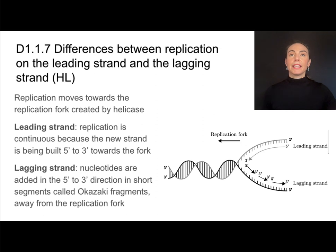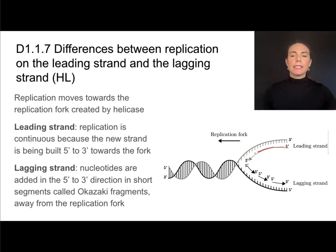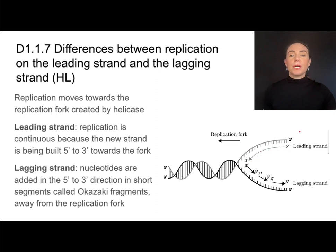Here's why the leading strand is continuous: it moves in the 5-prime to 3-prime direction. Remember, we can only add new nucleotides to the 3-prime end. So as DNA polymerase adds nucleotides — adding, adding, adding — it's always adding to the 3-prime end, building the strand continuously and moving toward the replication fork. Notice how the new strand is being built in the 5-prime to 3-prime direction and is anti-parallel to the parent strand.